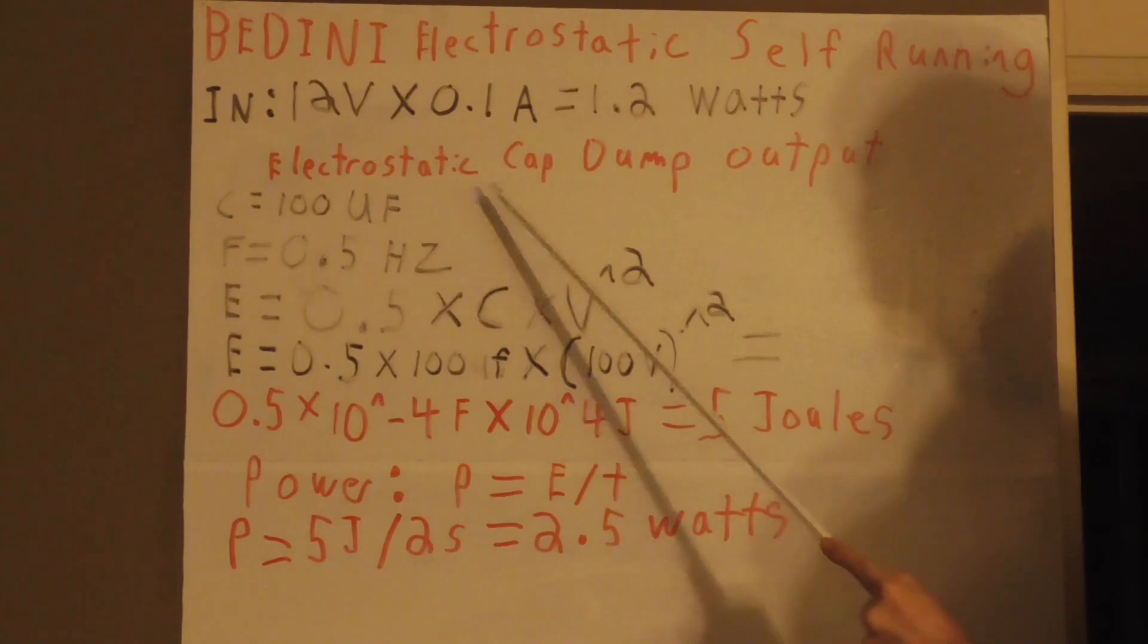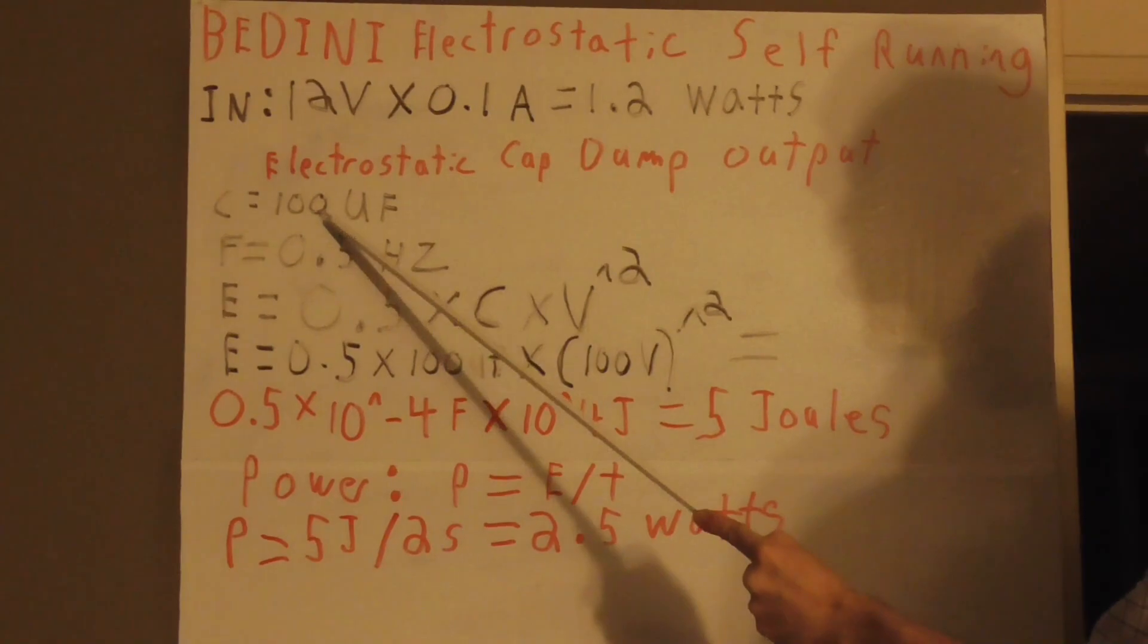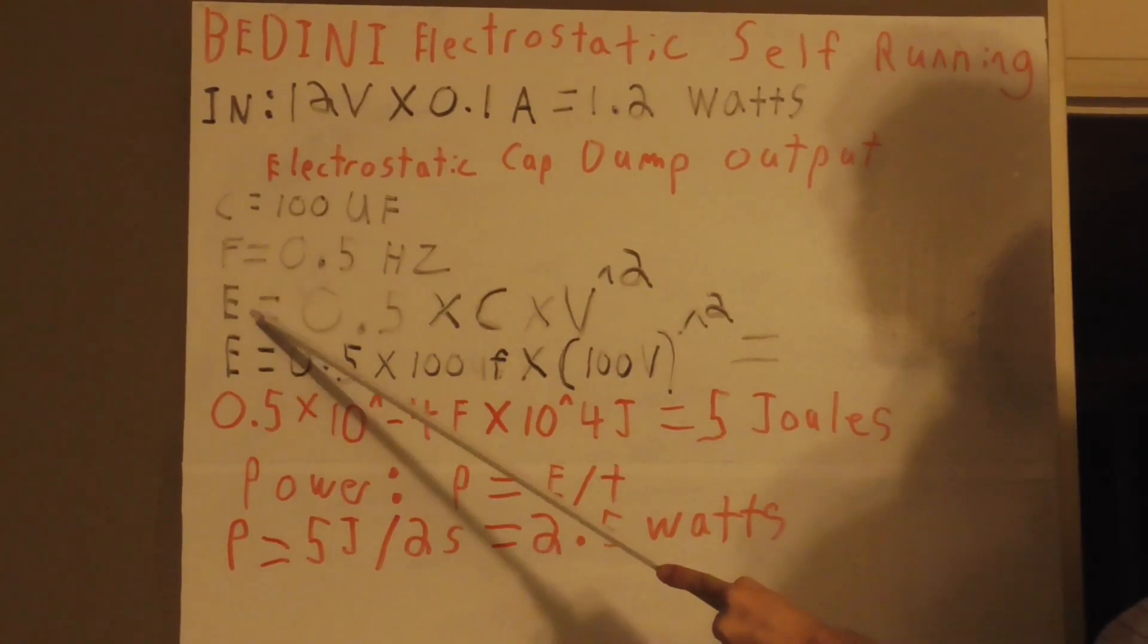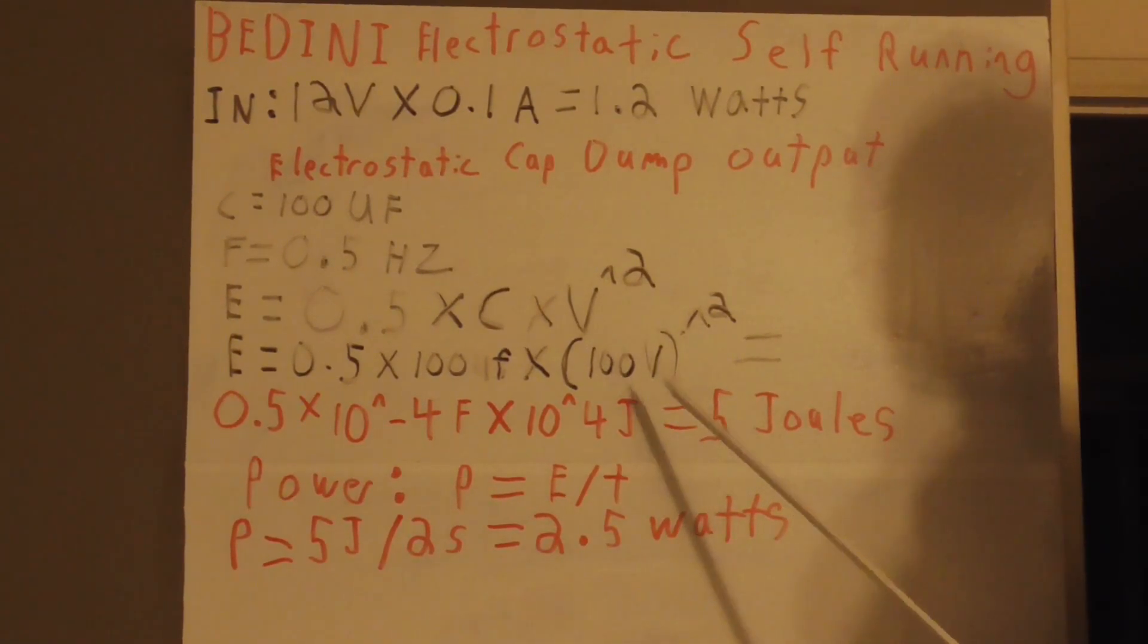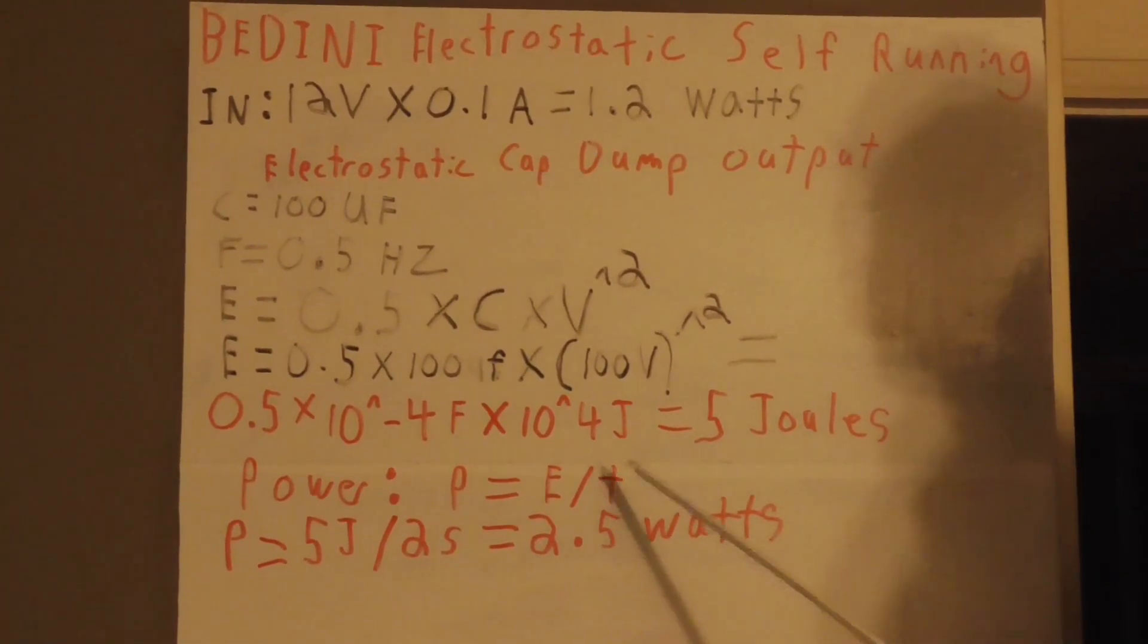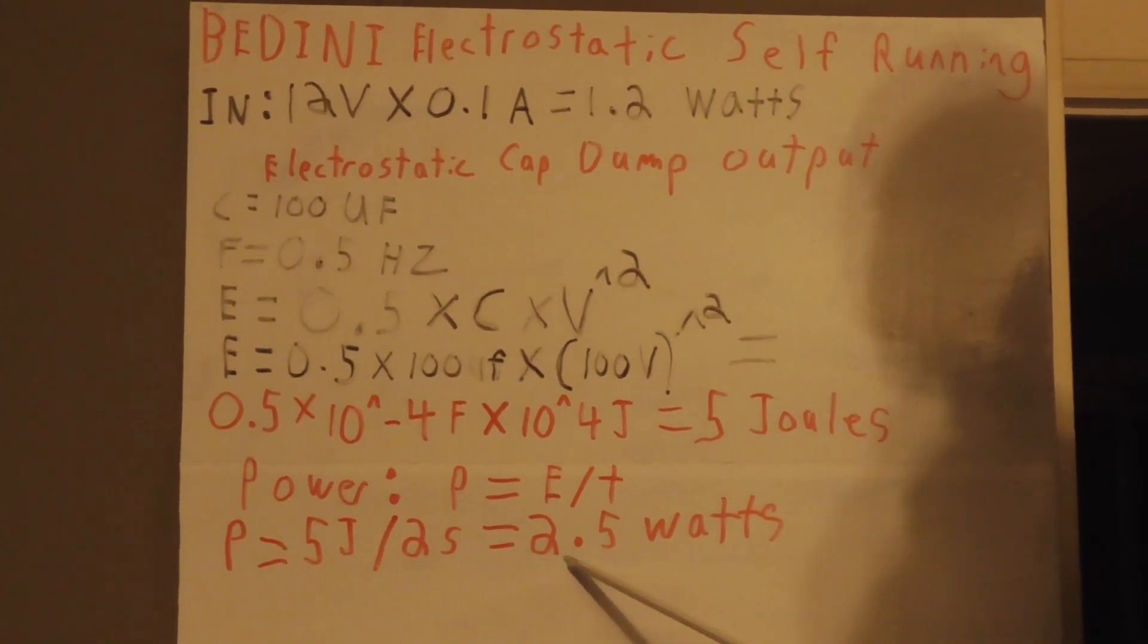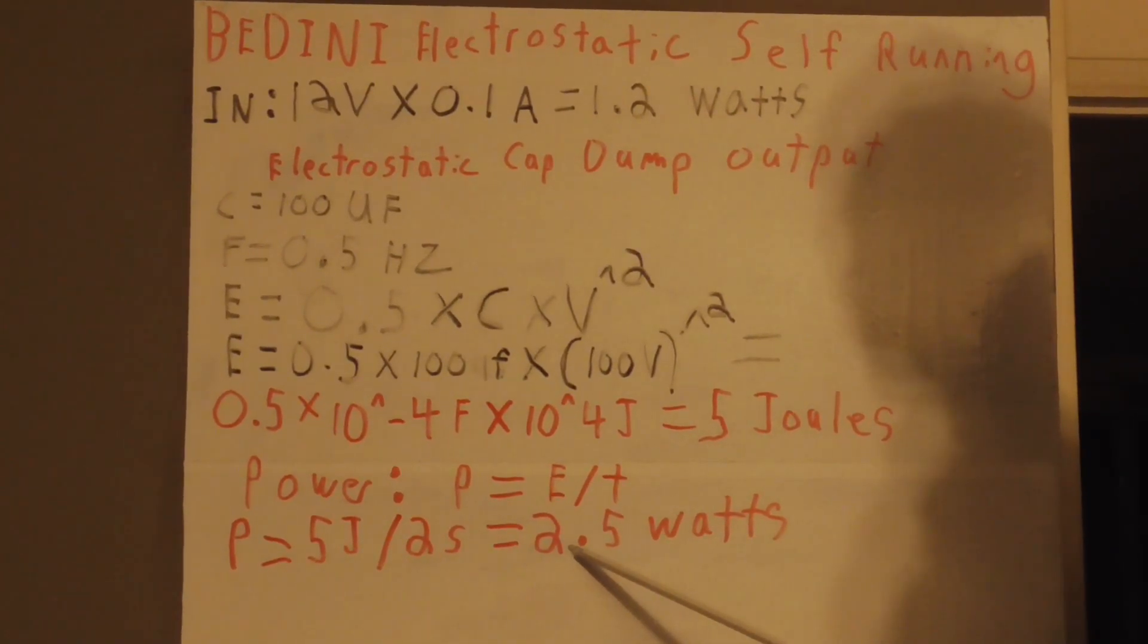Now taking a look at the electrostatic cap dump, should we introduce such a system, we'll be using a 100 UF capacitor. Here's the frequency and we want to calculate the energy here, so I calculate the energy and this shows up 5 joules. Now what happens here to calculate the power because we're pulsing it, we have to divide it and this gives us 2.5 watts output from the capacitor dump circuit.